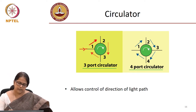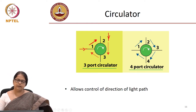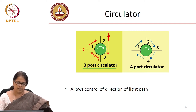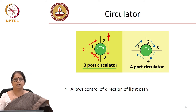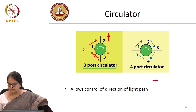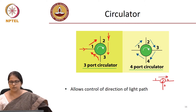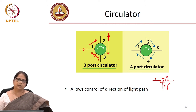The light from port 2 is available in port 3, it is not available in port 1. Light from port 3 is available in port 1 and not in port 2. The way the circulator is typically drawn, the circuit symbol is like this: from 1 to 2 transmission is possible, and 2 to 3 transmission is also possible.